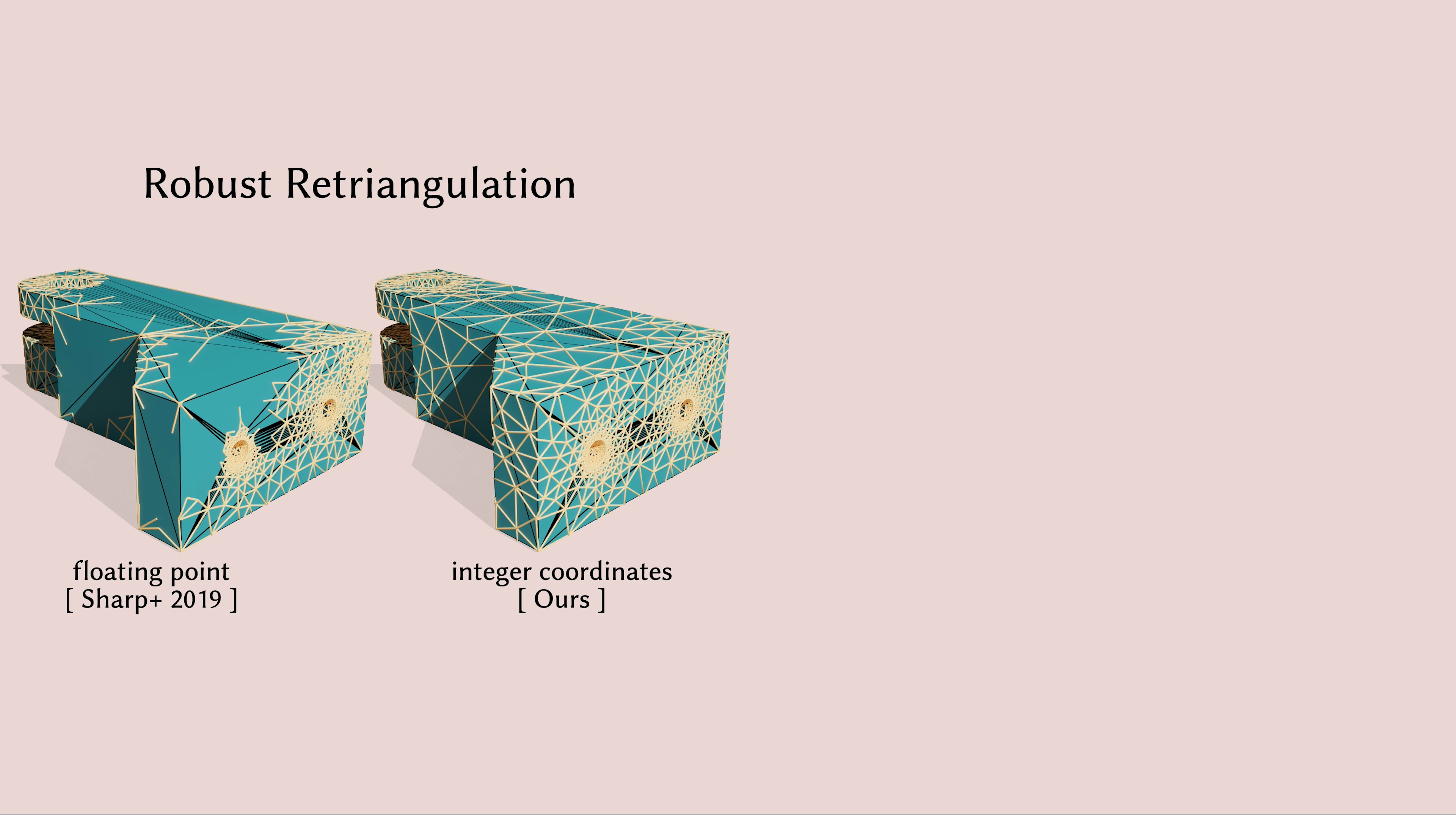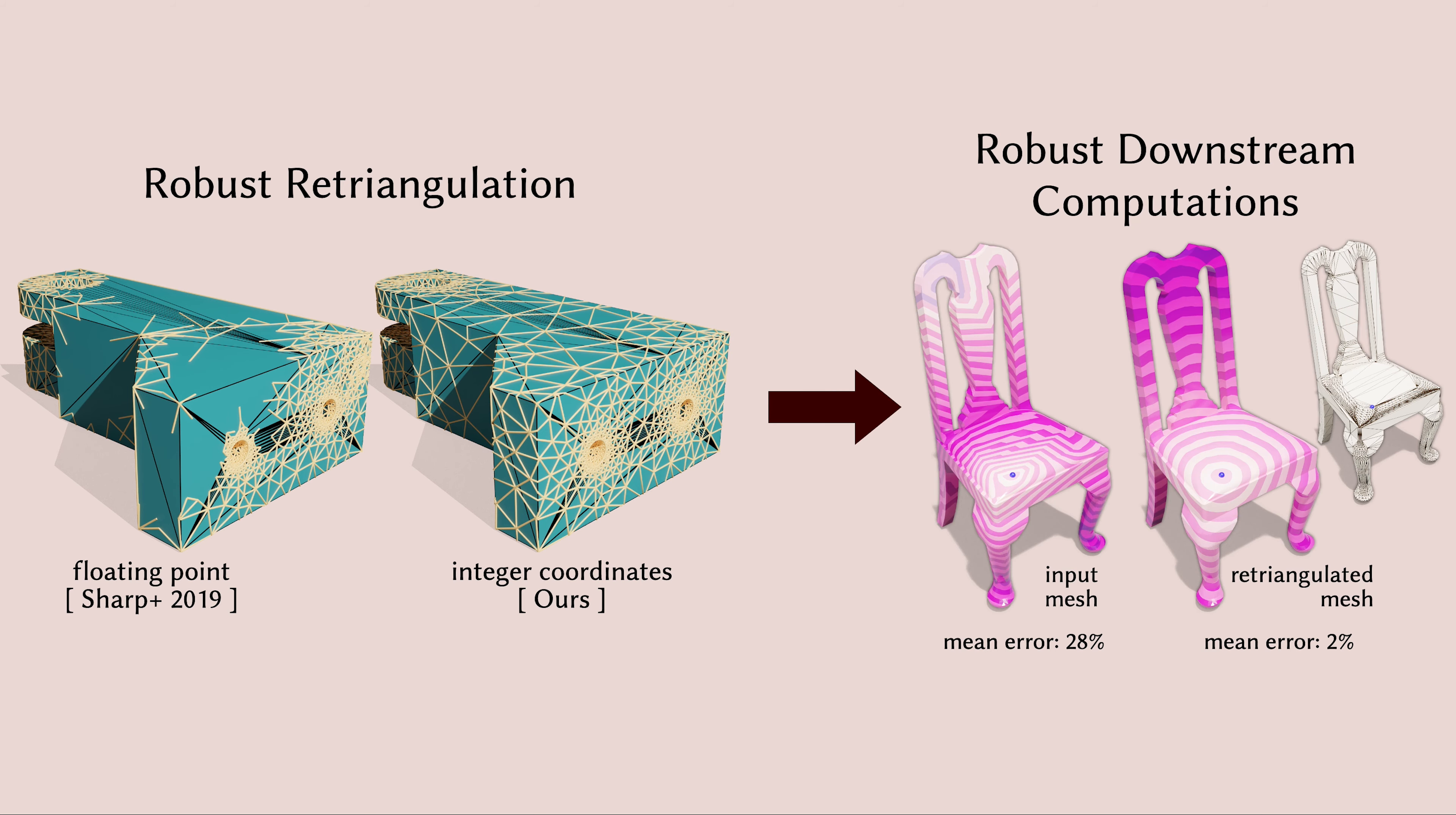Our data structure allows us to robustly retriangulate low-quality meshes, which in turn greatly improves the robustness of downstream algorithms such as geodesic distance computation.